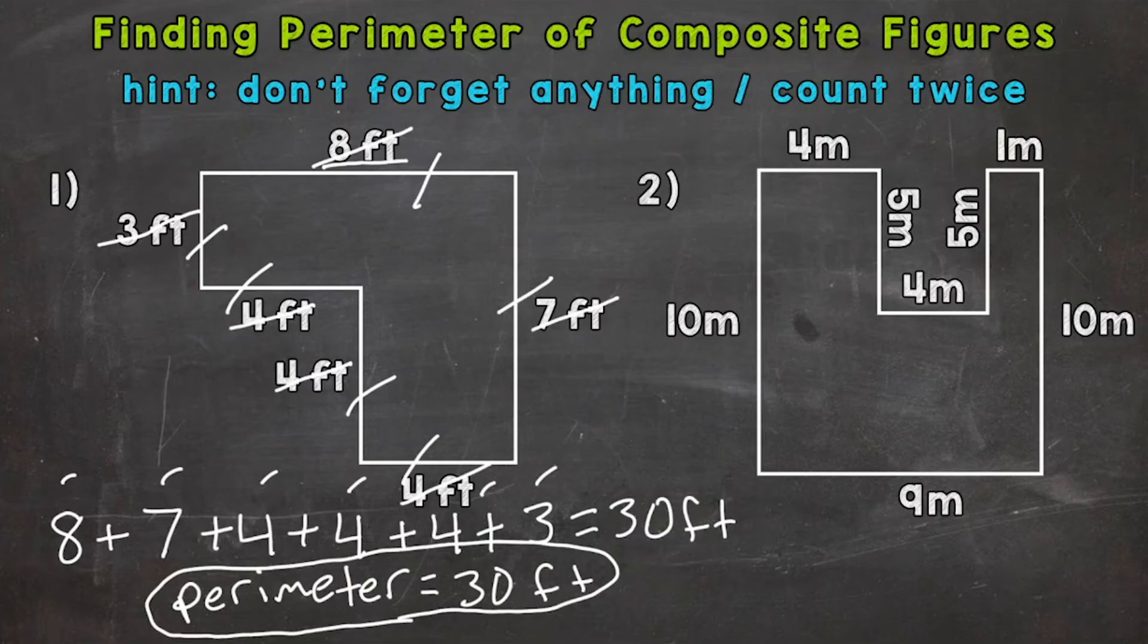We'll start up top with the four meters. Before I start, it doesn't matter which side or measurement you start with. I usually like to start up top, but really, it doesn't matter. The other strategy, if you don't like crossing off, is you can circle the numbers as you go along.